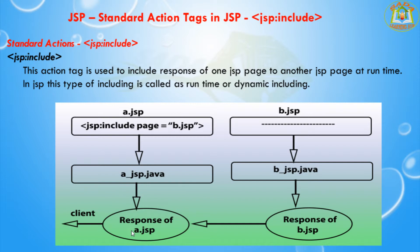There are two tags available: the directive include and the action include, and they have different functionality. The directive include is used for source code including — it includes the source code. Coming to the action include, it includes the response — whatever response is generated, that response is included.